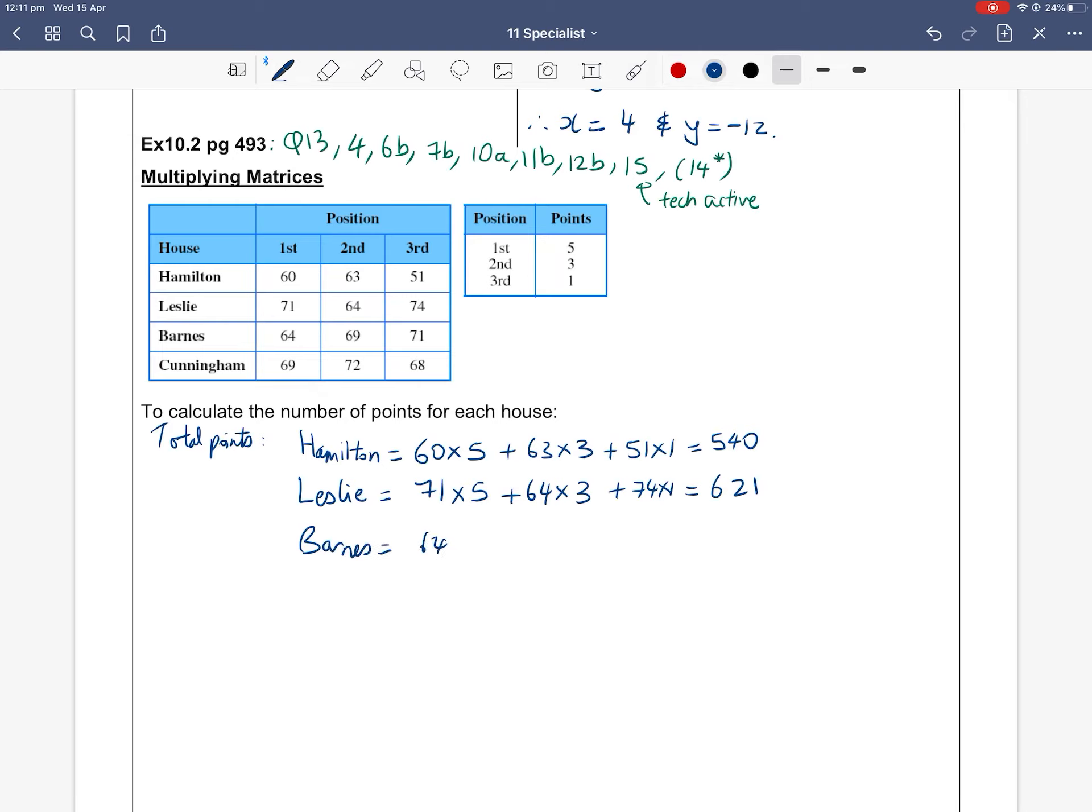We do the same thing for Barnes: 64 lots of five and 69 lots of three and 71 lots of one for the third place. So that comes to a total of 598. And then you have Cunningham. They had 69 lots of five and 72 lots of three and 68 lots of one, which comes to a total of 629.